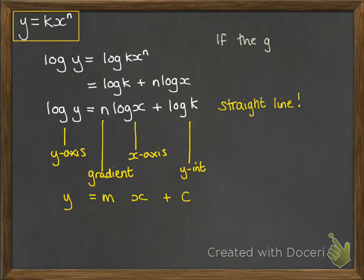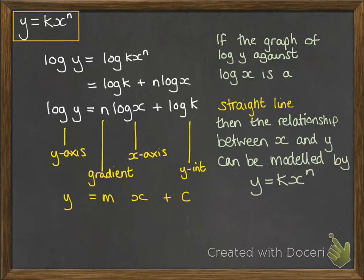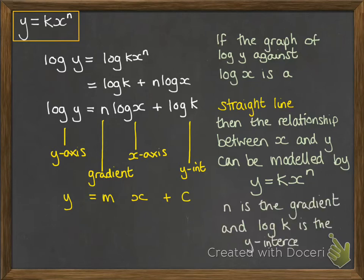If you plot the graph of log y against log x and you get a straight line, then that means that the relationship between x and y can be modeled with an equation of the form y equals kx to the power of n, where n is the gradient and log k is the y-intercept of the graph that you drew for log y against log x.